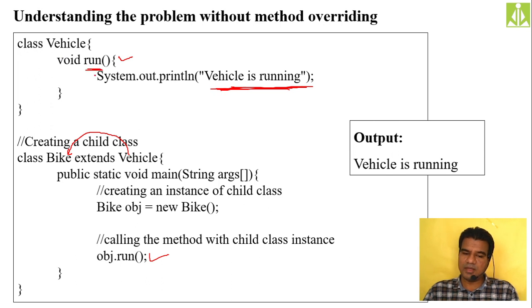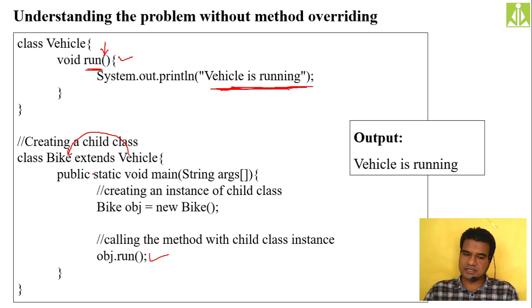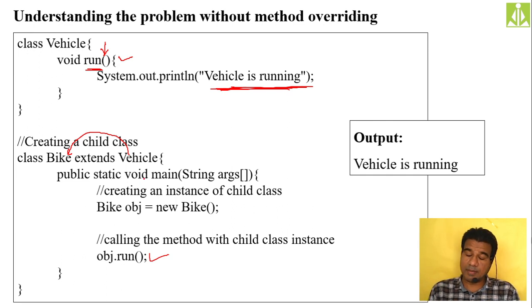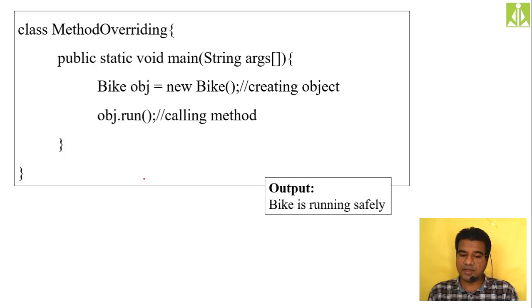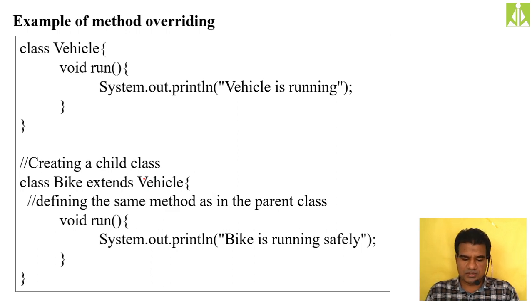The concept is simple: use the same method name inside your child class with the same parameters. As there are no parameters here, don't put any in the bike class run method either. When you create the bike object and execute the run method, it will execute from the bike class only, not from the parent class.